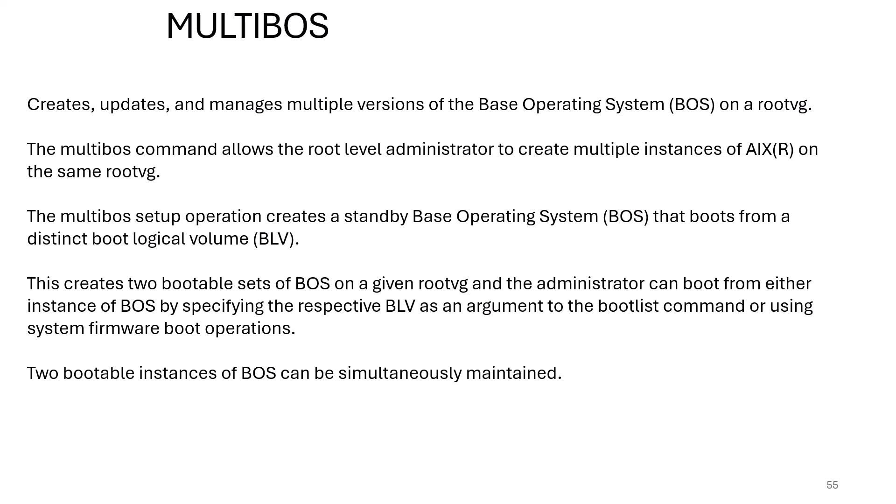Multiboss allows you to have a second rootvg effectively on the same disk as your original rootvg, creating a standby base OS that boots from its own boot logical volume. This originated when people had large direct-attached disks (e.g., 800 GB) and didn't need all that space for rootvg. Nowadays most people boot from SAN with custom-sized disks, so multiboss is less common. It is in your toolkit if you choose to use it, but I find it confusing.